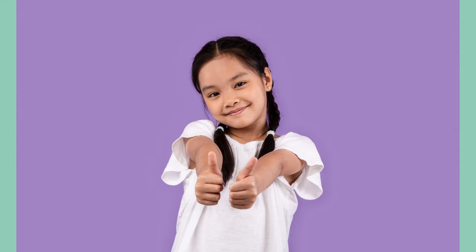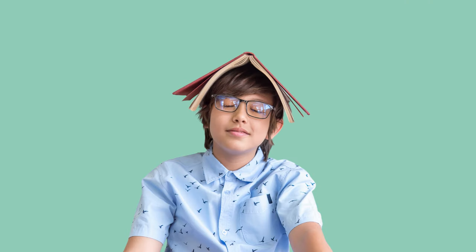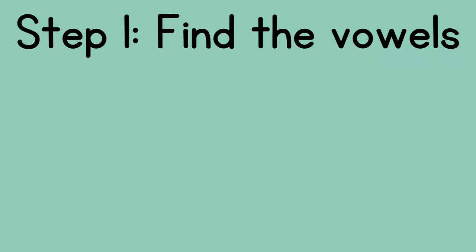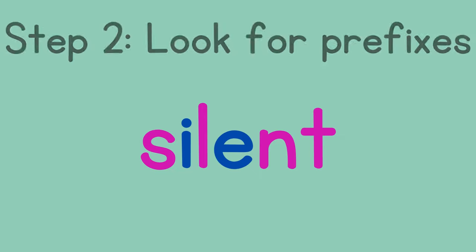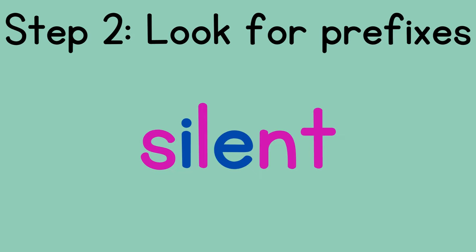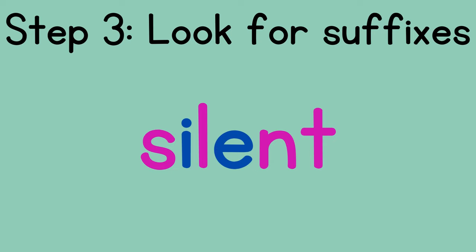Let's run through the five steps to solving multi-syllable words. Even if you happen to know the word right away, see if you can do each step to practice for when you come to words you don't yet know. Here we go. First, find the vowels. Next, look for prefixes and suffixes — there aren't any in this word.